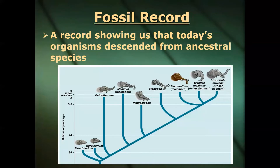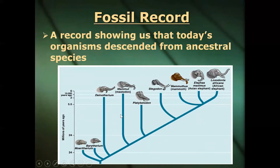For some species we have excellent fossil records of how they've been slowly changing over time. For example, elephants — today there are only two species alive, the African and the Asian elephant, but we have fossils of woolly mammoths, stegodons, and platybelodons, showing how they've been evolving over millions of years. Similarly with horses — millions of years ago they were like little ponies, and notice how they've been slowly getting bigger over time.